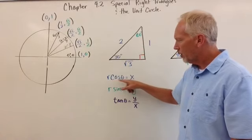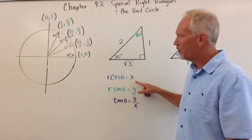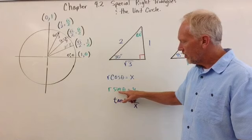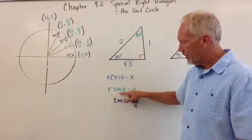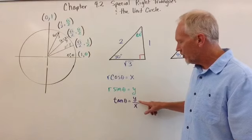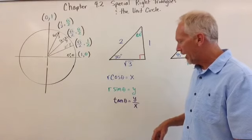Now remember, r cosine of theta is the x-coordinate, so I'll label that in blue. r sine of theta, the radius times the sine of theta, that will give us the y-coordinate, and then the tangent is y over x.